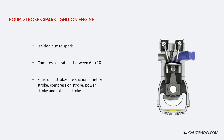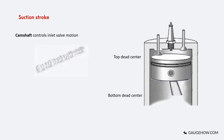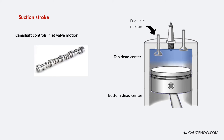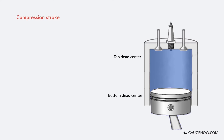In the first stroke, the suction stroke, the piston moves from the top dead center to the bottom dead center. As the inlet valve opens, the piston moves downward — the inlet valve motion is controlled by the crankshaft. Due to the piston movement, a partial vacuum is created inside the cylinder and a fuel-air mixture is injected inside. The exhaust valve is closed throughout the suction stroke. When the piston reaches the bottom dead center, the inlet valve closes and the suction stroke is completed.